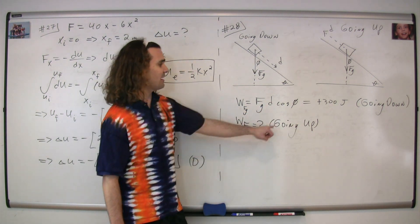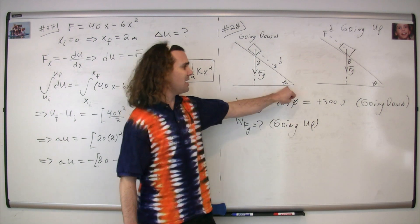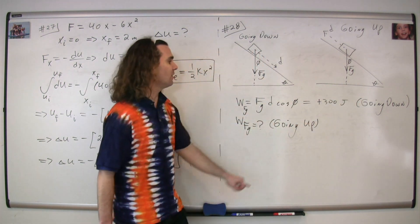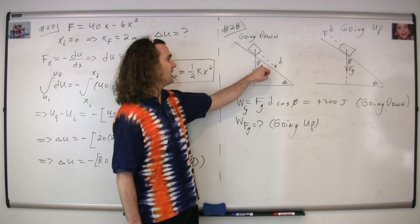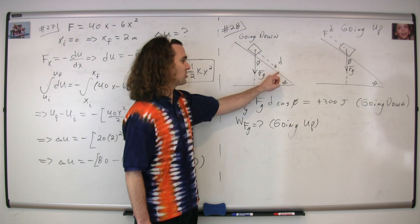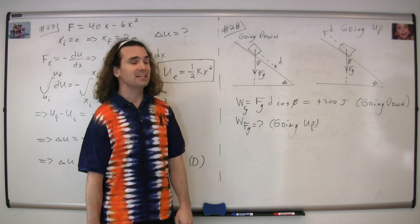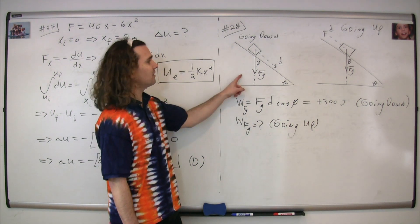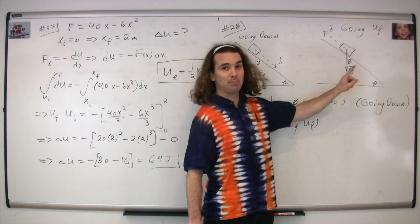In this particular case, I've actually called it phi because I've defined theta as the incline angle, and phi here is the angle between the direction of the force of gravity and the direction of the displacement. So what we now need to do is figure out what that angle is when we're going up the incline.